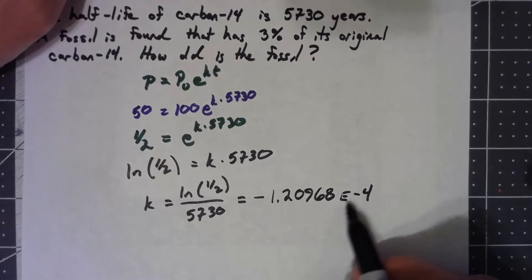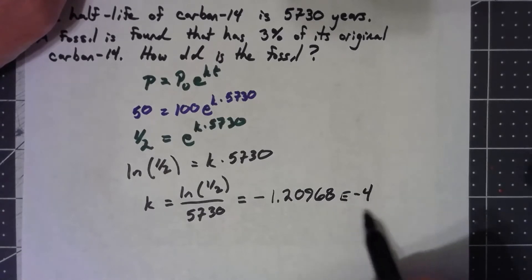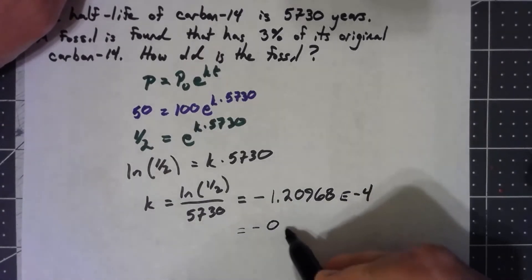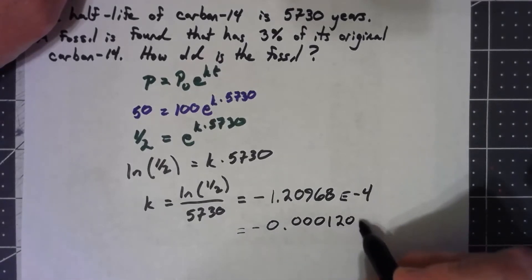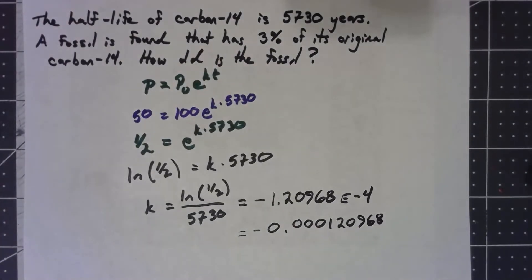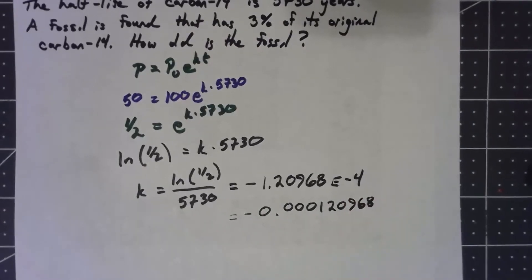What that e negative 4 is, is it's saying that the decimal point should be shifted four places to the left. This is actually negative 0.000120968. So be careful as you're writing it down and putting it in. Make sure you keep track of the fact that we've got that thing there. We've got that shift in where the decimal point is.